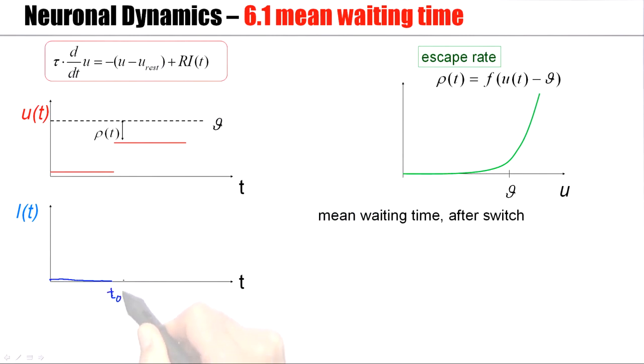If I integrate this, the membrane potential sits at U_rest and then jumps up to a new value U₀.